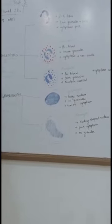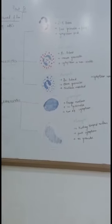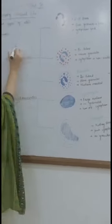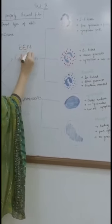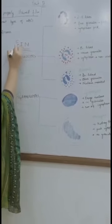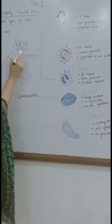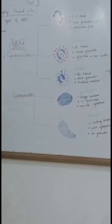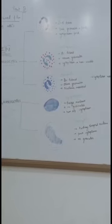Among granulocytes you can memorize them using the mnemonic BEN: B for basophil, E for eosinophil, and N for neutrophils. Now let's discuss the properties of each cell one by one.